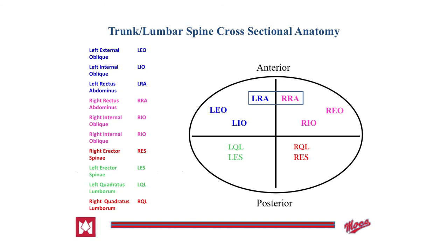Last but not least, we have our trunk and lumbar spine muscle circle. The ones you primarily need to know are the left and right rectus abdominis, right and left internal and external obliques, right and left quadratus lumborum, and right and left erector spinae. This is the last slide for this lecture, and an assignment will be posted to complete by Monday.